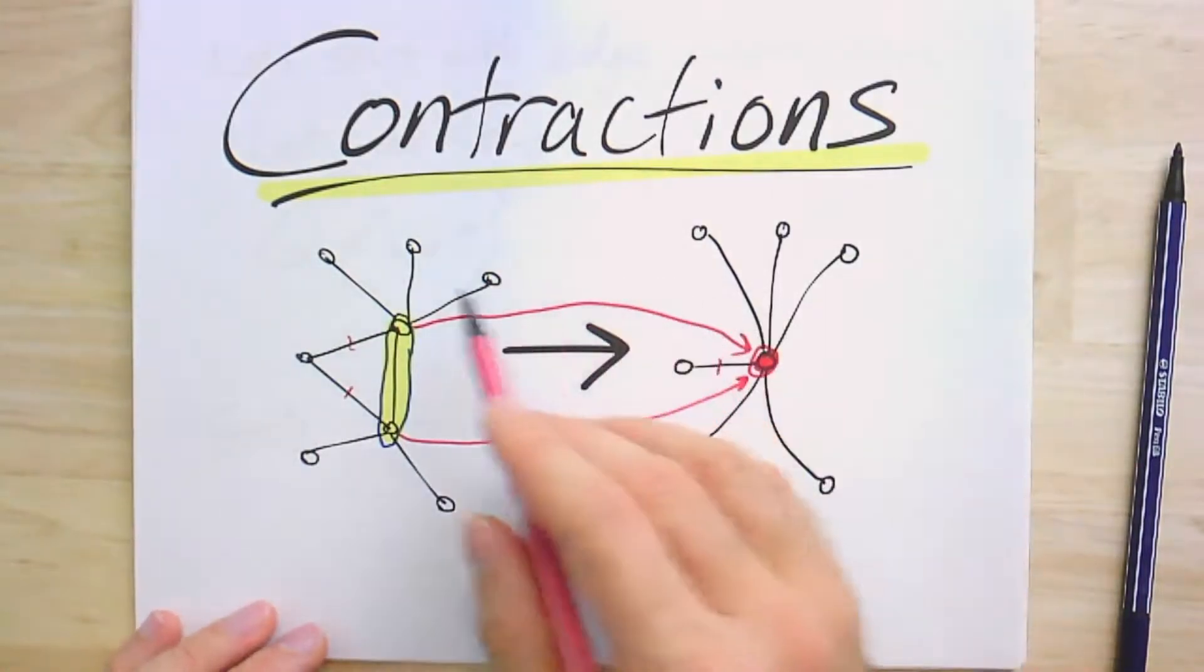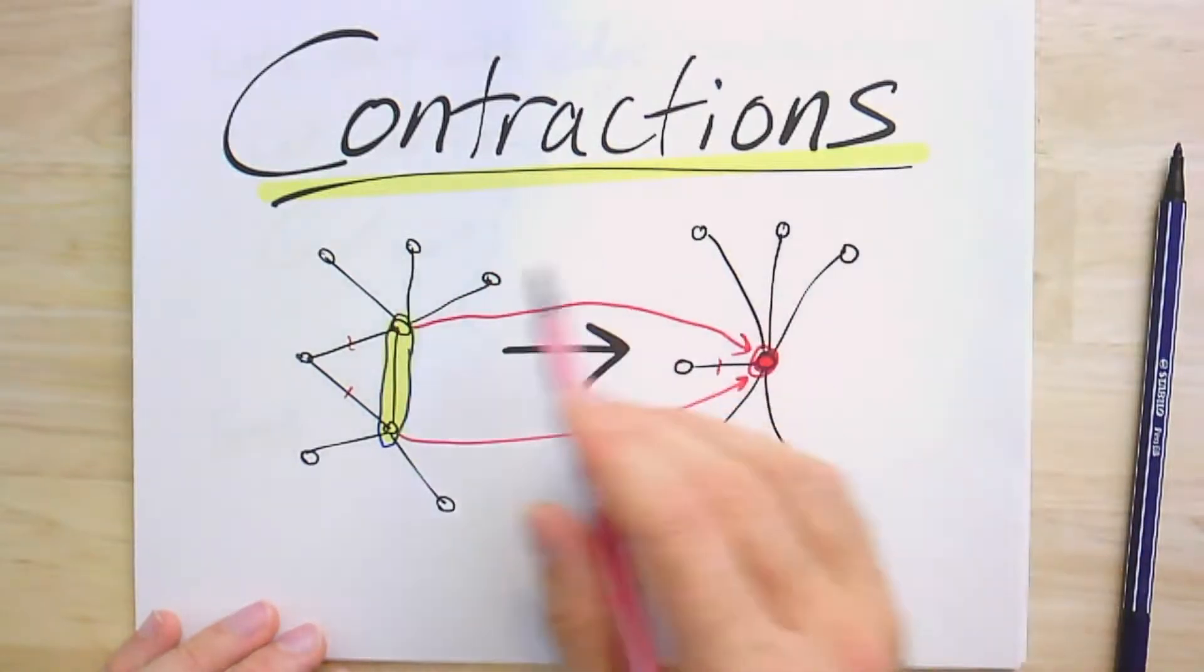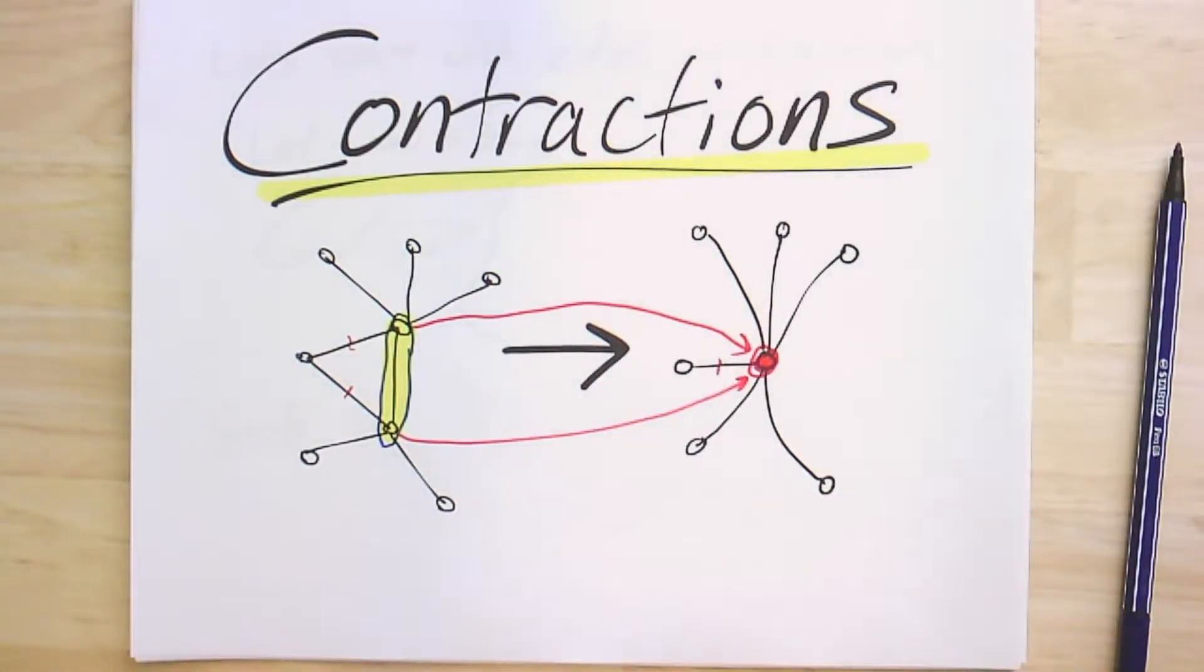And all the other vertices, hopefully I arranged them spatially so it's clear how they map across. So this is a simple example of a contraction.